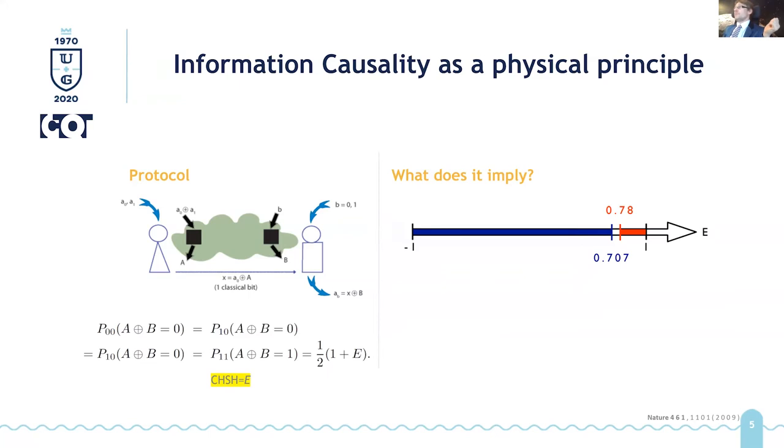and they say, okay, we violated CHSH-Bell inequality, and maybe they violated it up to some bound. So as far as quantum mechanics allows, or they violated it even more. And if you look at this protocol and the equations I have below, let's assume that the probability that A plus B equals zero or one conditioned on the inputs of Alice and Bob being equal to the indices of the probabilities is this, then if you have access to such a probability distribution, you can use it to violate CHSH inequality up to E.